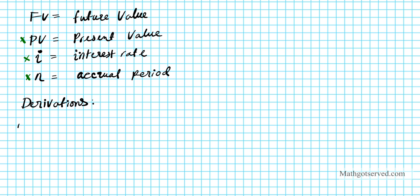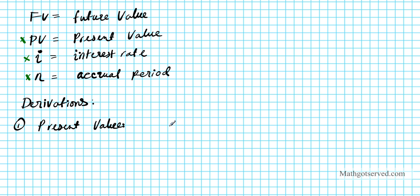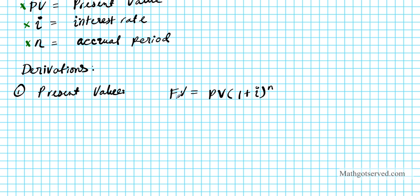The first derivation we're going to do is the present value. For present value, we're going to start with the original formula: FV equals the present value times 1 plus the interest rate raised to the number of periods. If I want to find the present value PV, my goal is to isolate PV. I can do that in just one step — I will divide both sides by 1 plus i to the nth power.